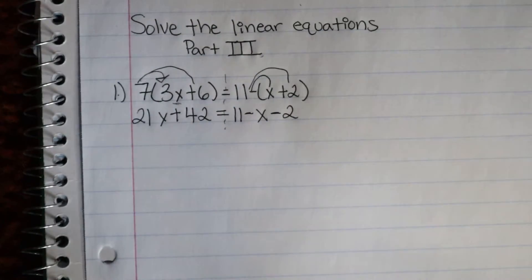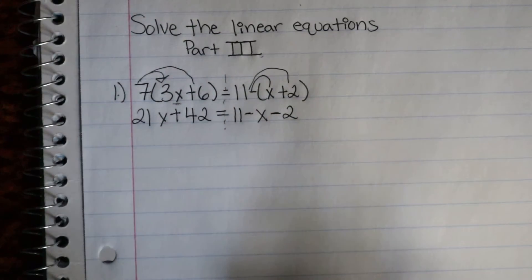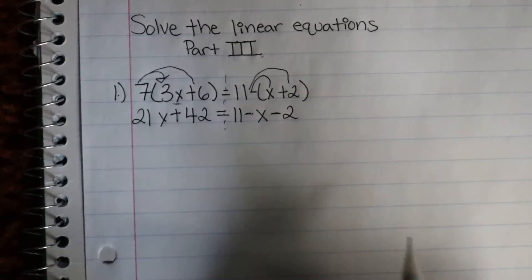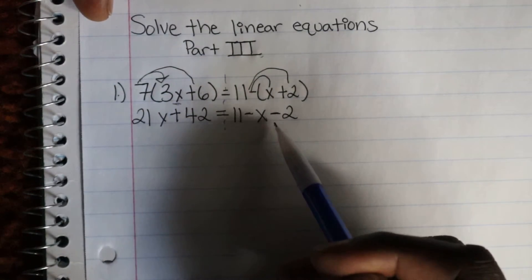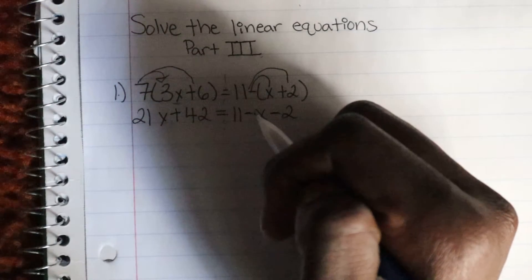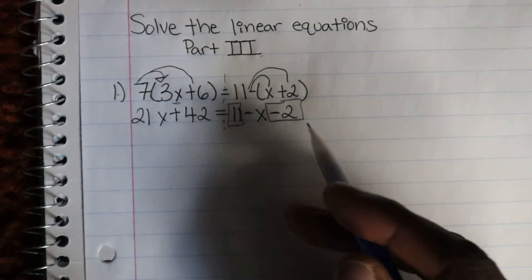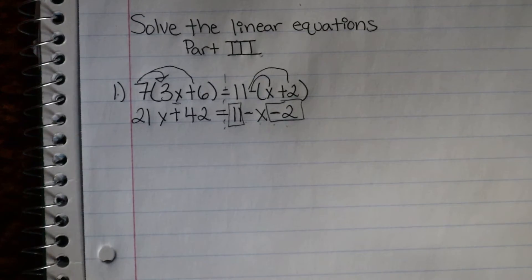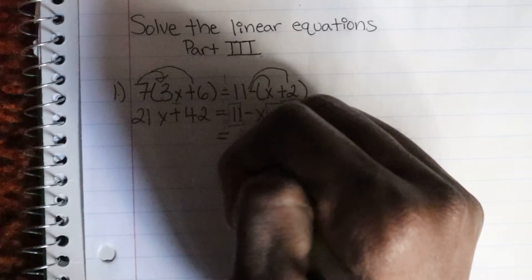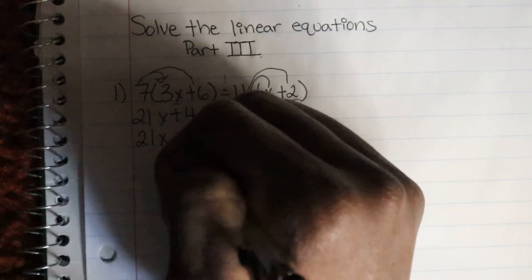Now that we have that situated and everything is in tip-top shape, let's continue on and try to clean this up as much as possible. Looking at one side of the wall — the right — we can see we have 11 minus x minus 2. So I would like to simplify the right side more: positive 11 and negative 2, so 11 minus 2 gives us 9. So we get 9 minus x, and on the other side we have 21x plus 42.